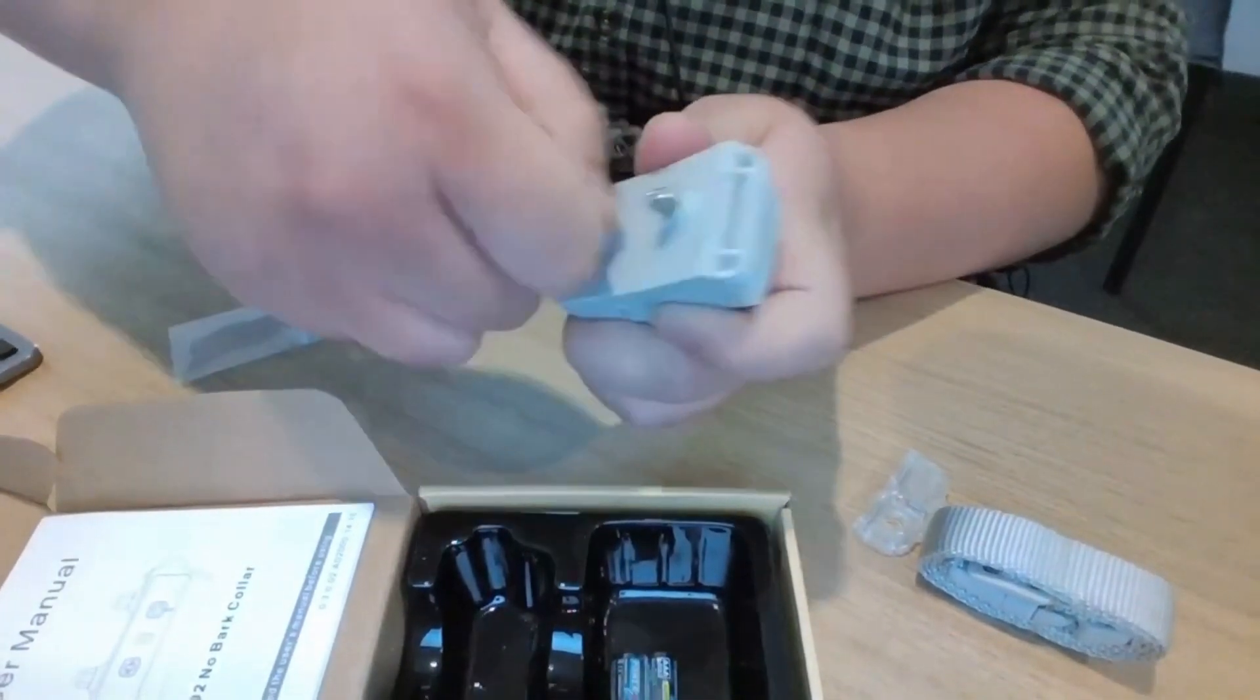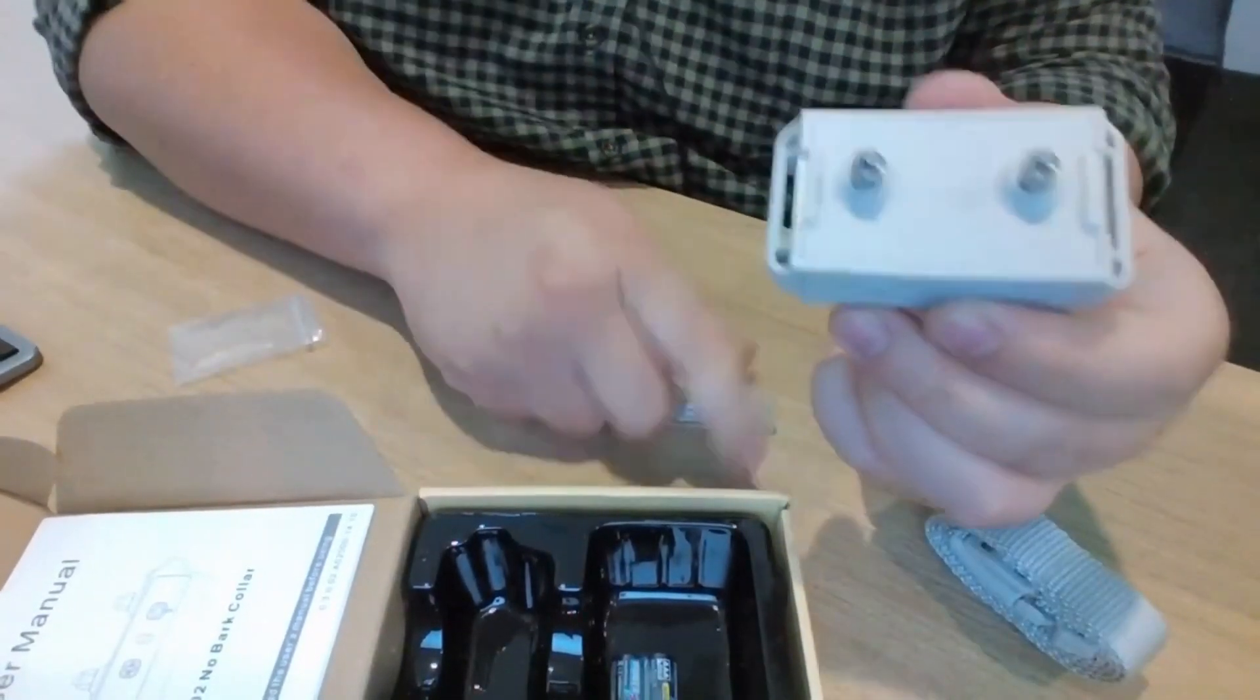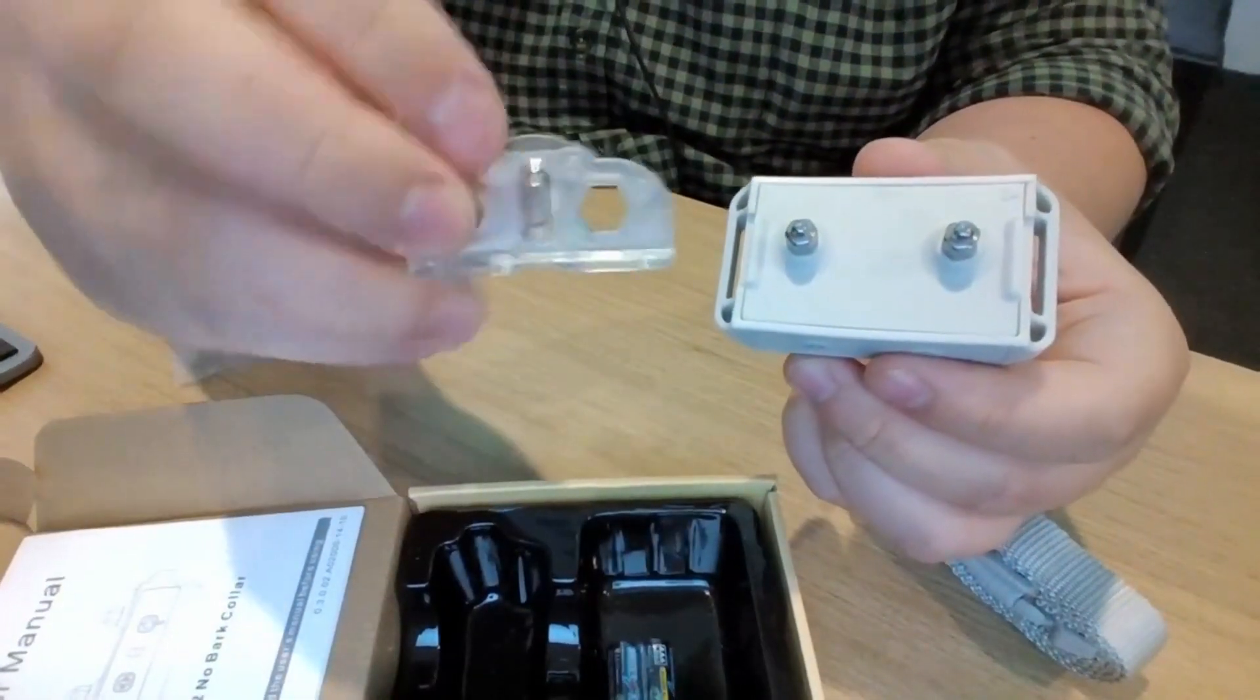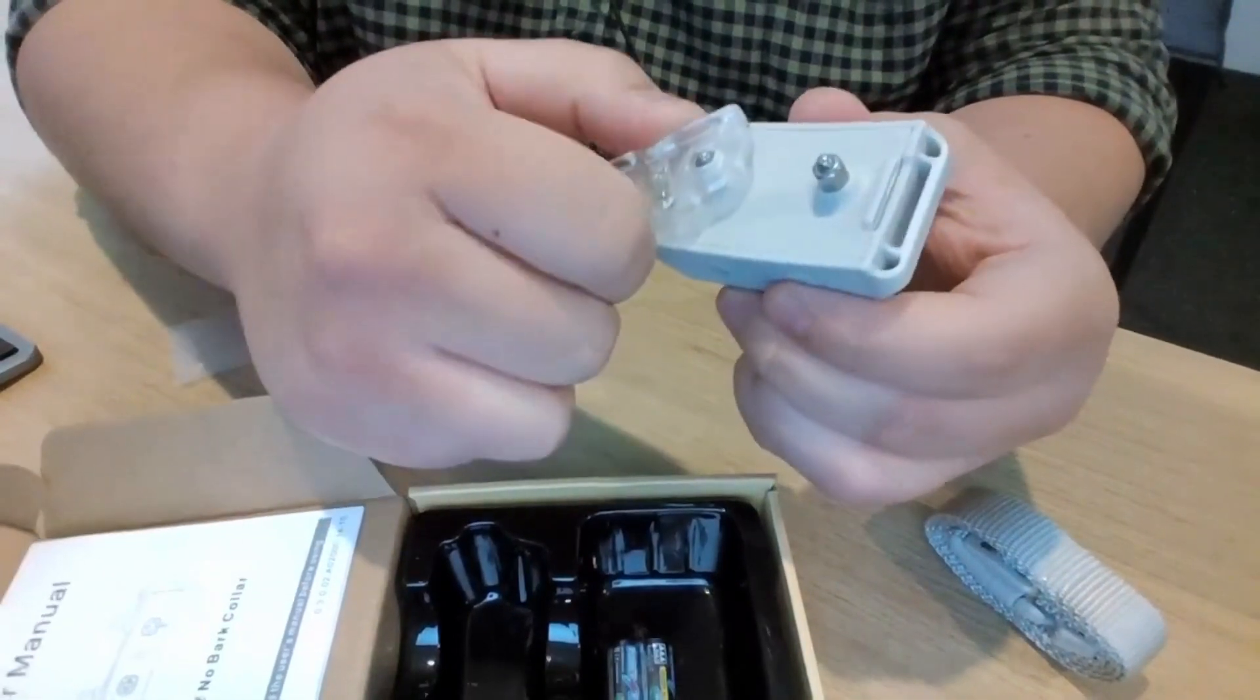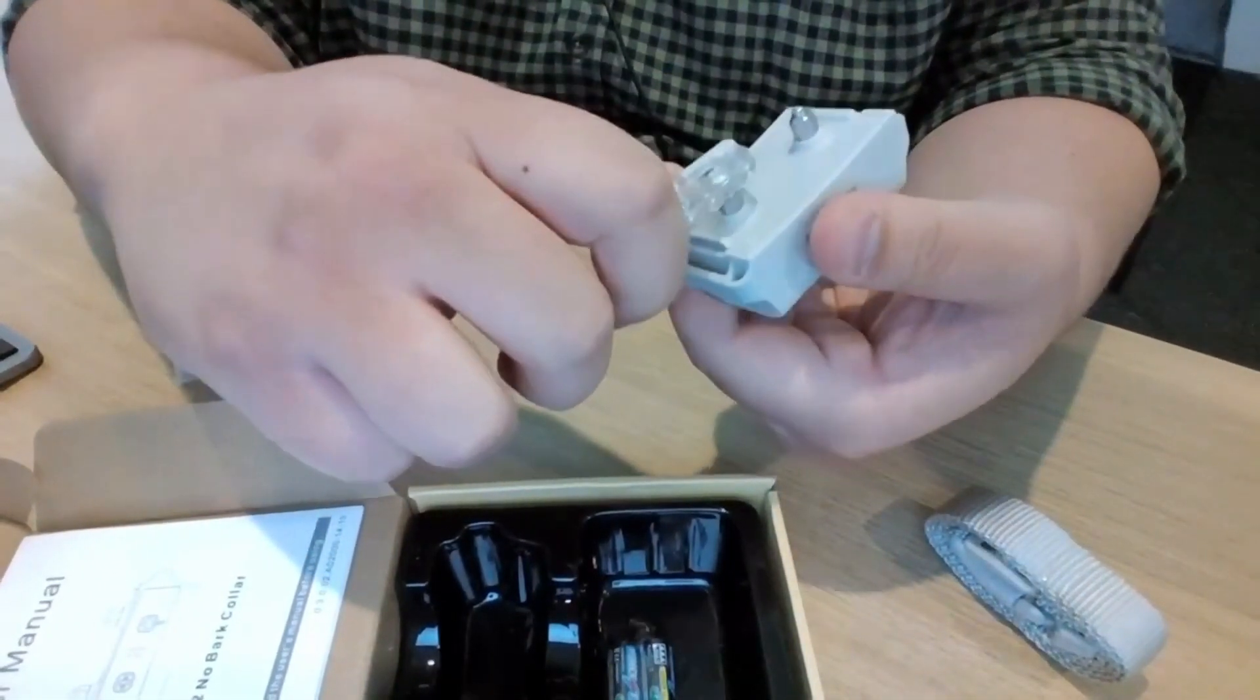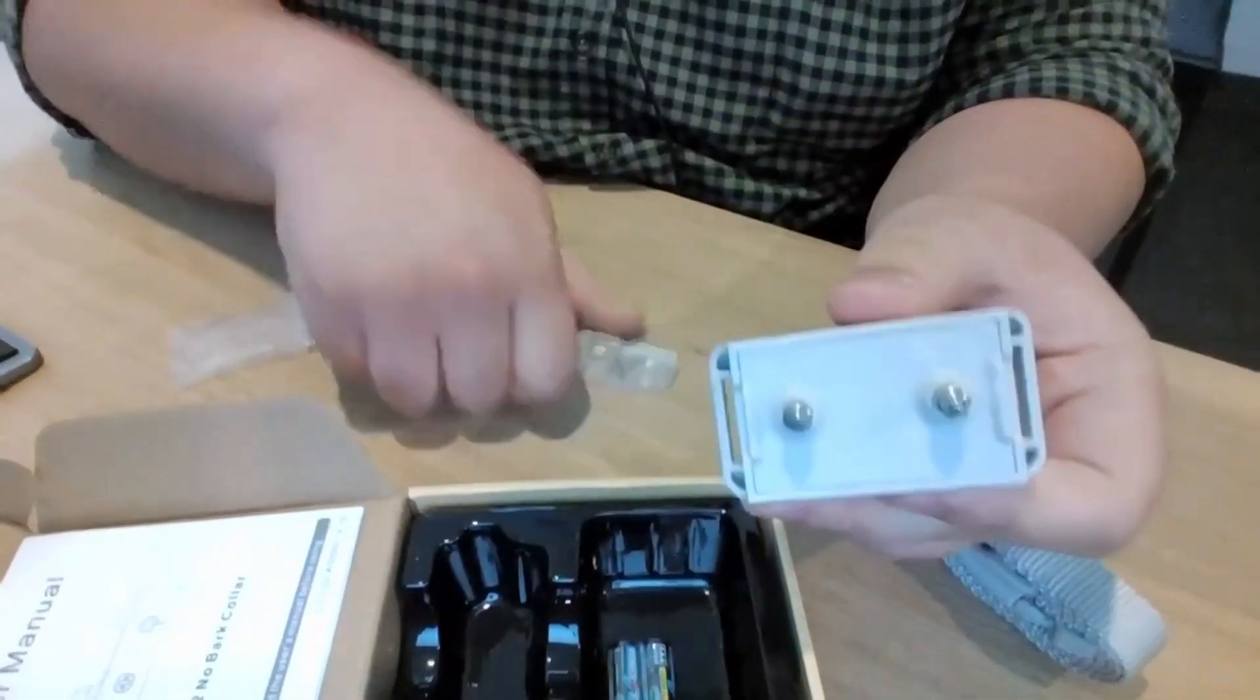Now in the kit as well, they do come with this little thing which is a little tester here. This also doubles up as an actual allen key, so you can actually take this and cinch down the little static connections. Once it's cinched down, you're pretty much good to go.